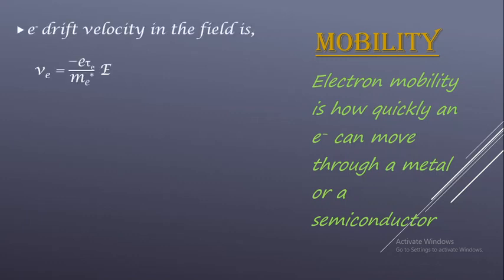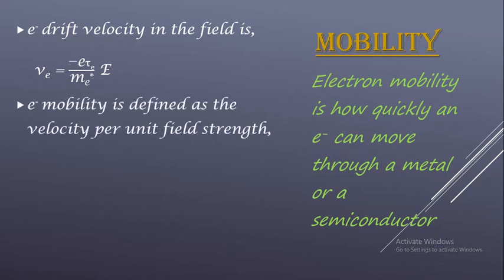Previously we derived the electron drift velocity equation: Ve = −(e·τe / me*)·E, where the negative sign is because of the electron's charge. Electron mobility can be defined as the velocity per unit field strength — it is the ratio of velocity to field strength. So mu_e (electron mobility) can be written as Ve / E, where E is the field strength.